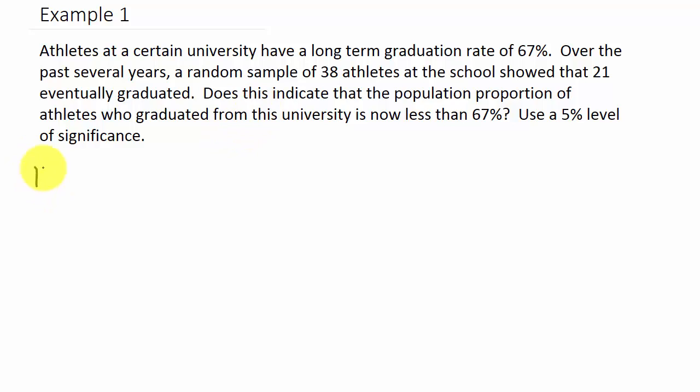Okay, so let's state our null hypothesis. That's going to be P equals 67 percent, so that's 0.67. And we want to make the claim—based on what we've done here with the 38 athletes that we chose and 21 eventually graduated—well, we think that this should be a little less. So the alternate hypothesis H sub 1 is less than 0.67.